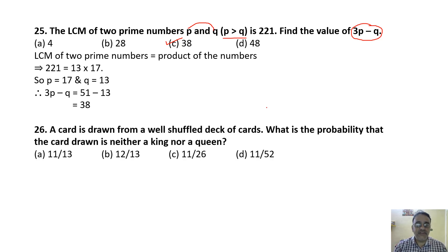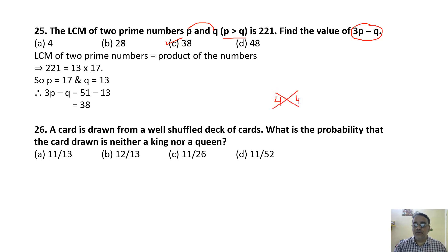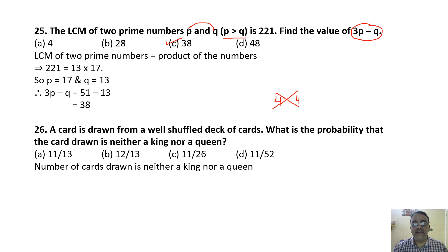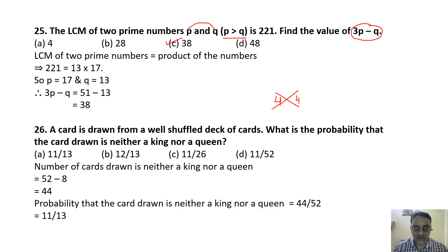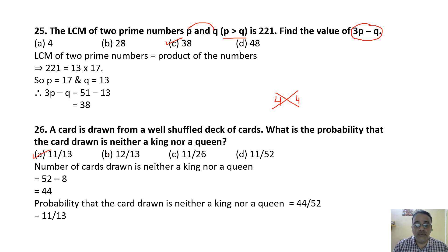Question 26: A card is drawn from a well-shuffled deck. What is the probability it is neither a king nor a queen? Total cards = 52, kings = 4, queens = 4. Cards that are neither = 52 − 8 = 44. Probability = 44/52 = 11/13. The correct answer is option A.